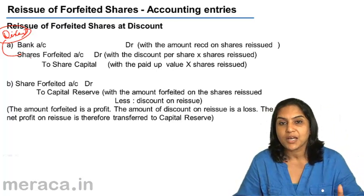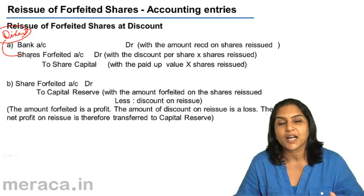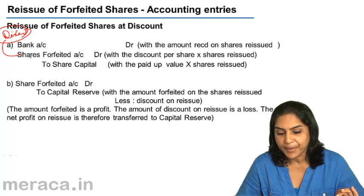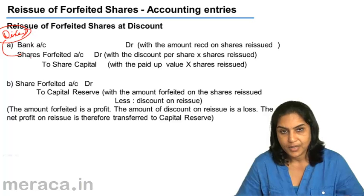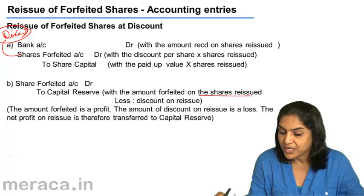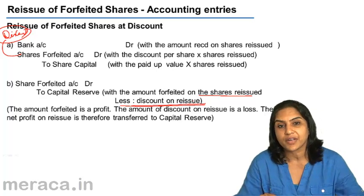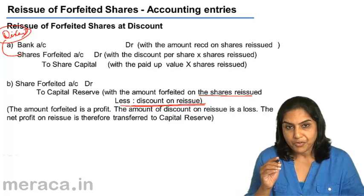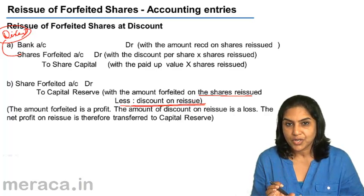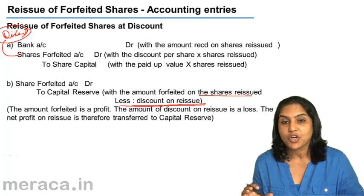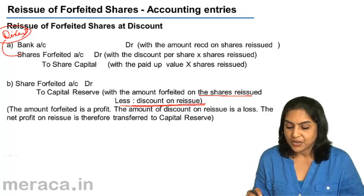So our entry is: Bank account debit with the amount received — say 9 rupees per share; Shares Forfeited account debit, 1 rupee per share; to Share Capital, 10 rupees. Instead of Discount account debit, we say Shares Forfeited account debit. There is one more entry: Shares Forfeited account debit to Capital Reserve. The amount here is the amount forfeited on the shares reissued, less the discount on reissue. That is the net gain. The amount forfeited was a gain — the profit on forfeiture. The discount on reissue is a loss. Profit minus loss: if there is any balance left, only that balance should be transferred to the Capital Reserve account.